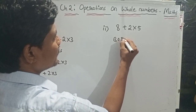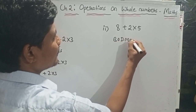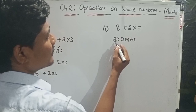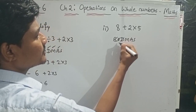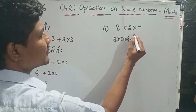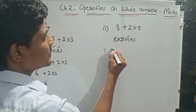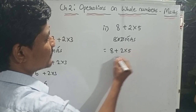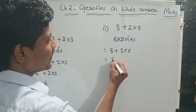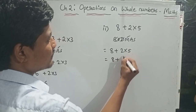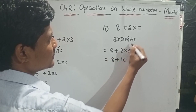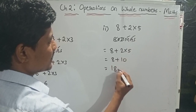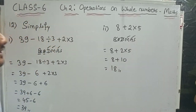For the next question, I will use the BODMAS rule again. There is no bracket and no 'Of'. Division is not there. Multiplication is there, so I go with multiplication: 2 into 5 is 10. Then addition: 8 plus 10 is 18. So 18 is the answer.